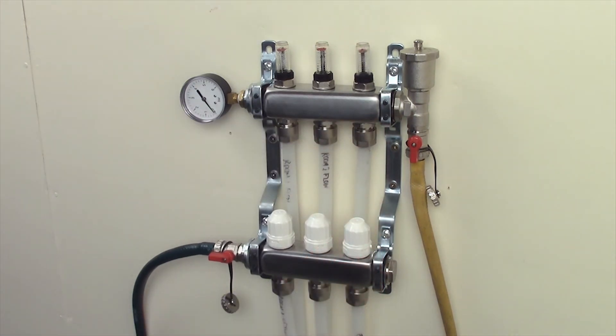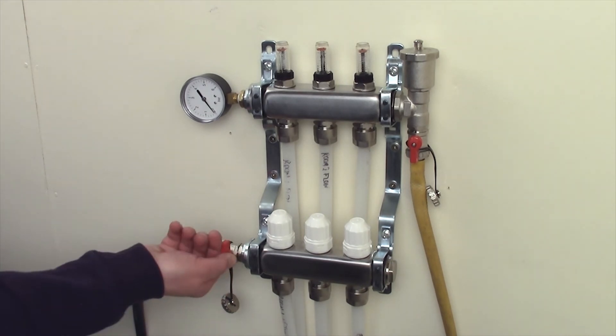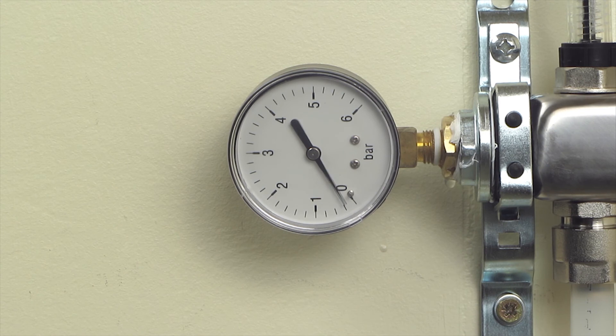Once all loops are filled with water and all air has been removed, close the drain cock on the bottom left return bar and allow the system to become repressurized up to four bar.